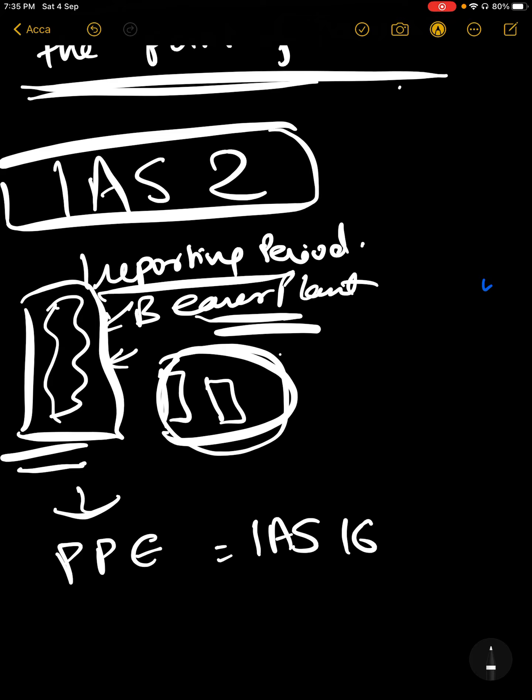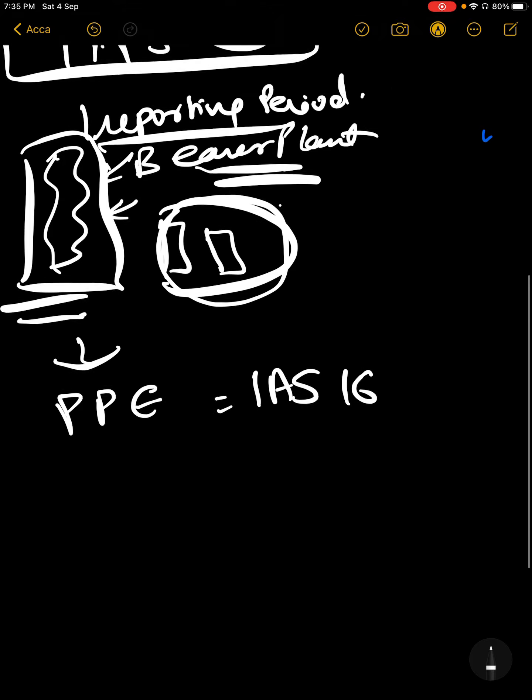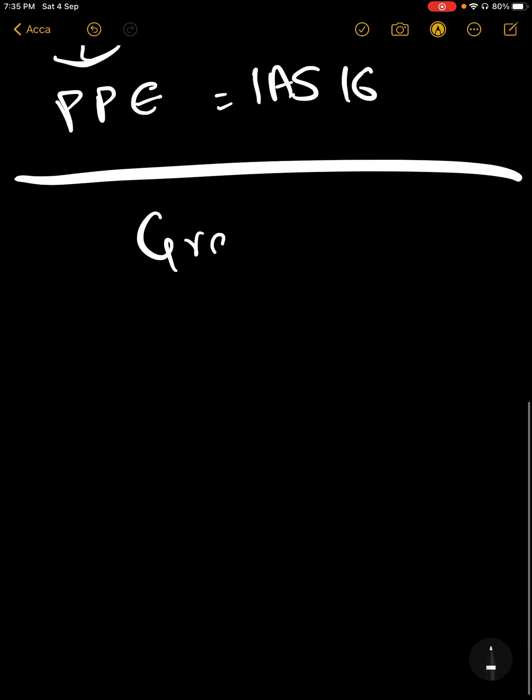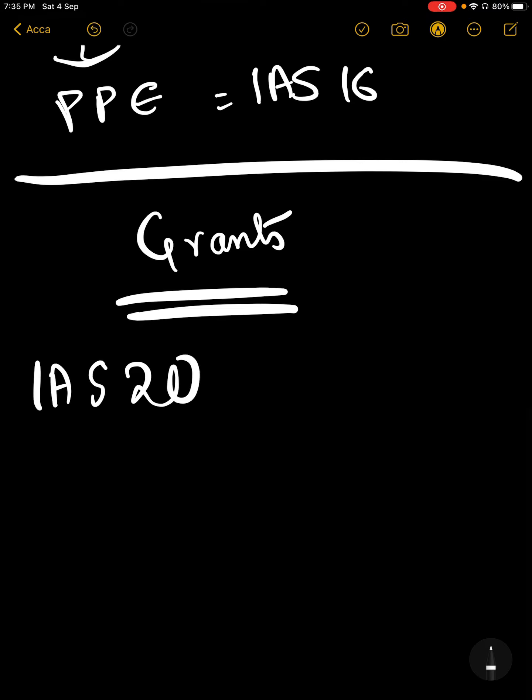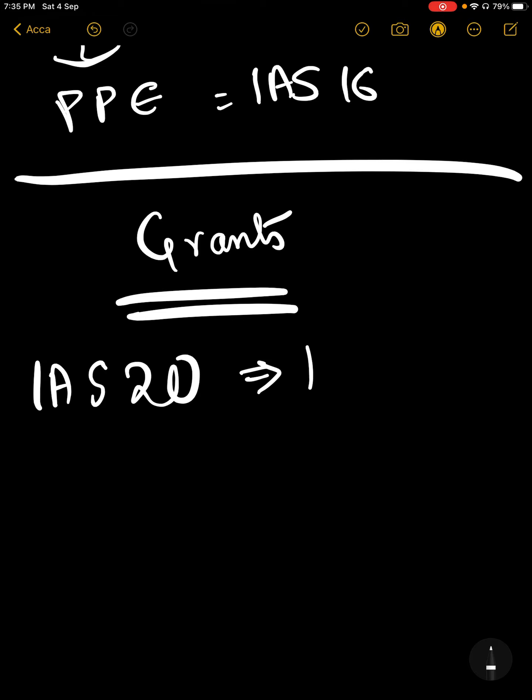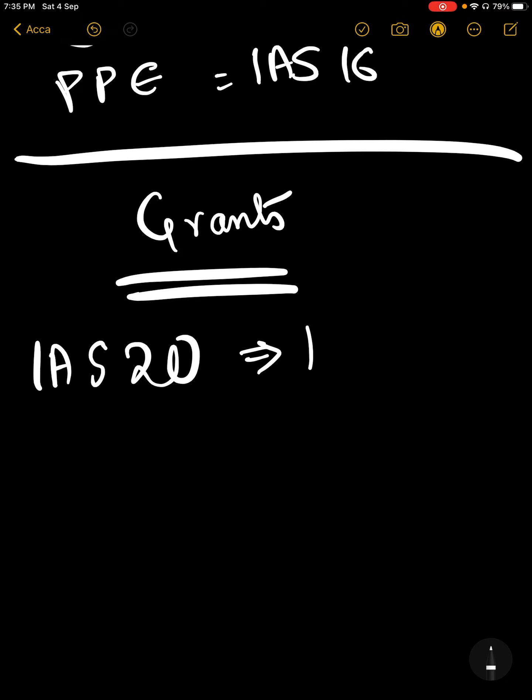IAS 41 has its own criteria for recognition of grants. In the case of IAS 20, grants are recognized when the grant becomes receivable.